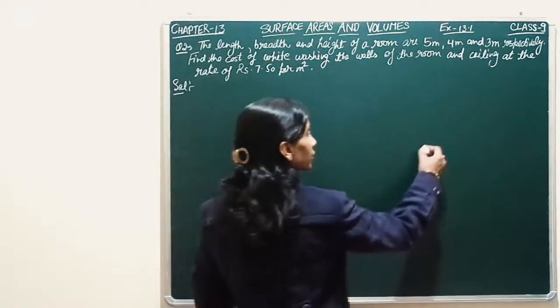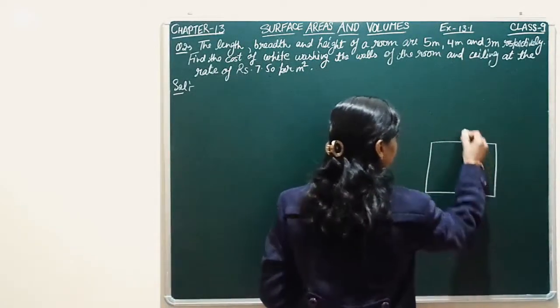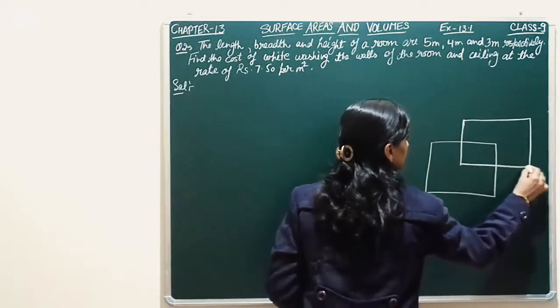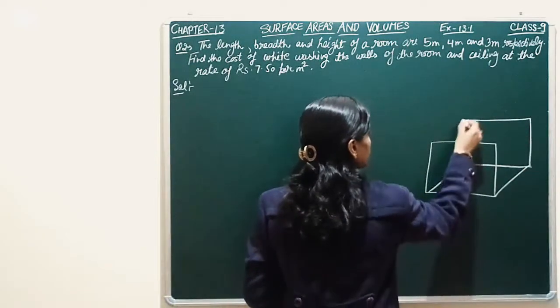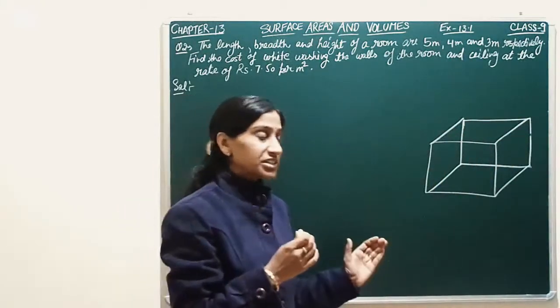That means here is a room. The room's 4 walls are also whitewashing. So here is L, B, H - three different parts of the room. So this is a room in cuboid shape.